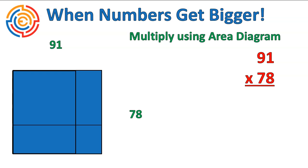I'm going to divide it up using exactly the same size of square. I'm not trying to make it proportional at all. I'm just recognizing that 90 goes here, 1 goes here, 70 is there, and 8 is there.